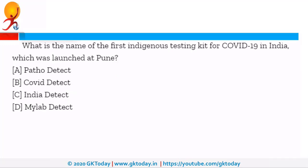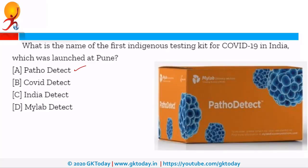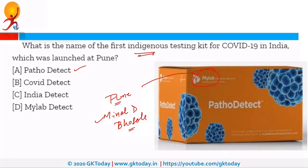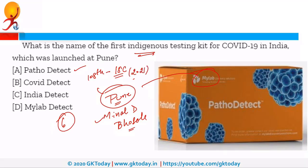What is the name of the first indigenous testing kit for COVID-19 in India, launched in Pune? The right answer is Patho Detect, designed by MyLab Discovery — a Pune-based institution headed by Meenal Deshpande. This first indigenous kit was developed in a record time of six weeks, whereas developing such a kit usually takes three to four months. MyLab Discovery is now the first Indian firm to get full approval to make and sell COVID-19 testing kits. Notably, the 108th edition of the Indian Science Congress is going to be held in Pune in 2021.